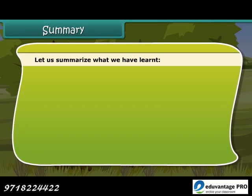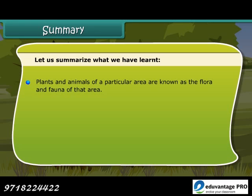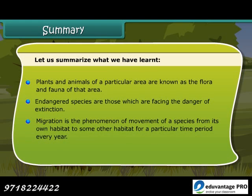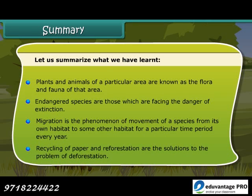Let us summarize what we have learned. Plants and animals of a particular area are known as the flora and fauna of that area. Endangered species are those which are facing the danger of extinction. Migration is the phenomenon of movement of a species from its own habitat to some other habitat for a particular time period every year. Recycling of paper and reforestation are the solutions to the problem of deforestation.